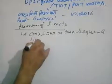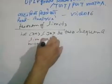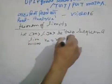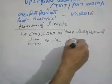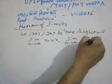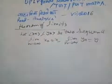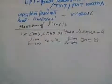If the limit as n tends to infinity of xn equals x, and limit as n tends to infinity of yn equals y, where xn and y are finite numbers, then we have the following limit theorems.